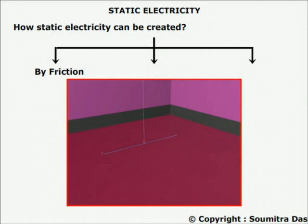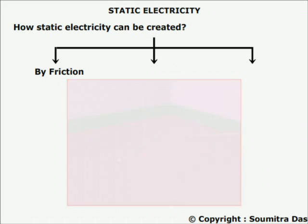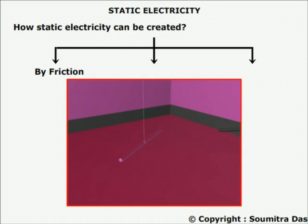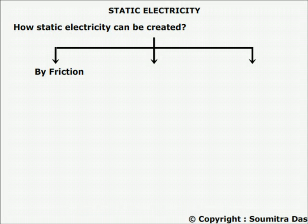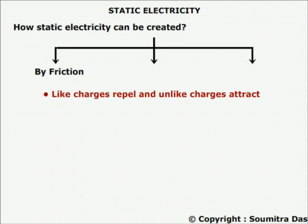A glass rod is hung by a cotton thread and another glass rod is brought near it — they repel each other. Whereas when a PVC rod is brought near, they attract each other. But when an uncharged metal rod is hung in the same way, attraction will still be there due to induced charge, which will be discussed later. Therefore, we conclude that like charges repel and unlike charges attract. Repulsion is a sure test for electrification.